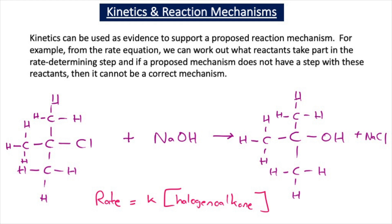For tertiary haloalkanes reacting with sodium hydroxide, the rate determining step only involves the haloalkane: it breaks up to form a carbocation and a chloride ion, and then the nucleophile attacks the carbocation. This is a completely different mechanism compared to a primary haloalkane, which is why the rate equations are different for the two reactions.